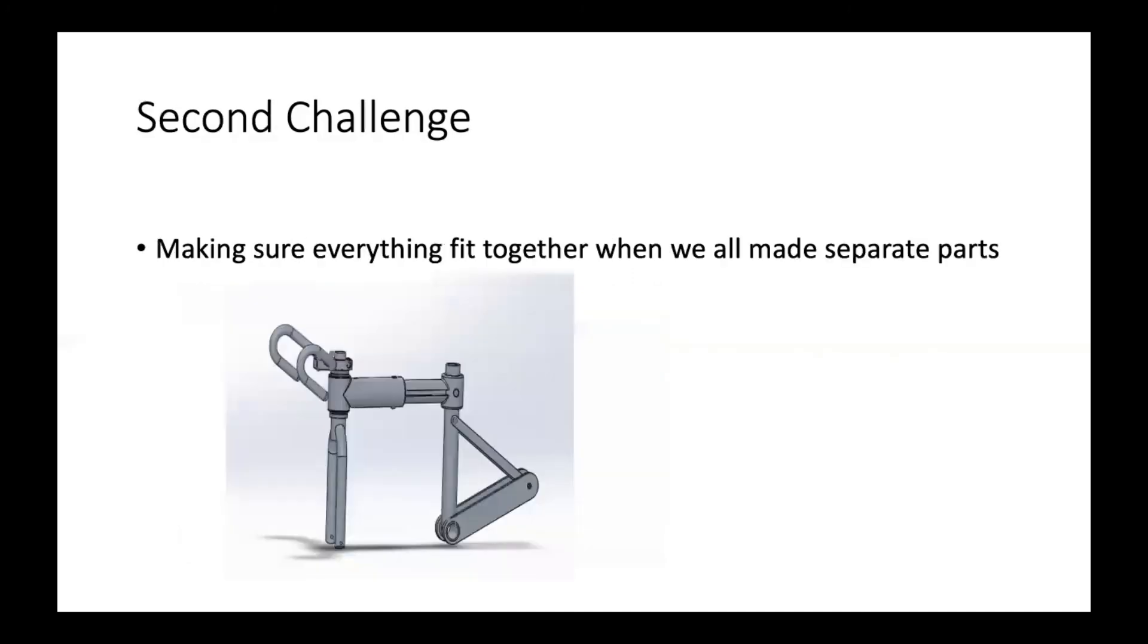The second challenge was making sure that everything would fit onto the big bike assembly at the end of the project, since every part was being made by separate people. To do this, we had to make sure that everyone knew the dimensions and the unit of measurements that we were using to make sure that everything would fit at the end. We did this by making sketches that show the dimensions and sending it to everyone that was making the parts and also uploading it onto file exchange so everyone knew what we were doing.